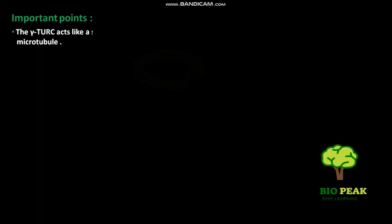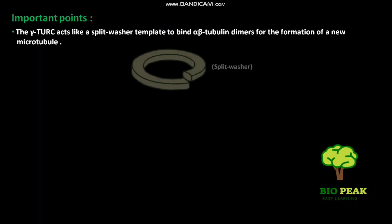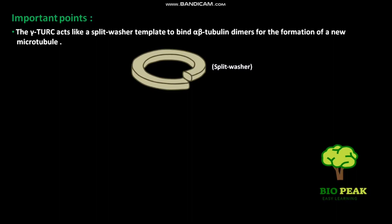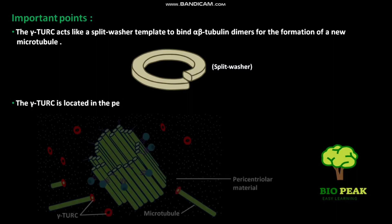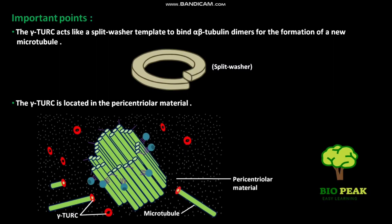Now, important points. The Gamma-TuRC acts like a split washer template to bind alpha-beta-tubulin dimers for the formation of a new microtubule. The Gamma-TuRC is located in the pericentriolar material.